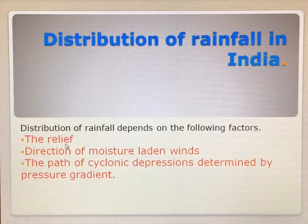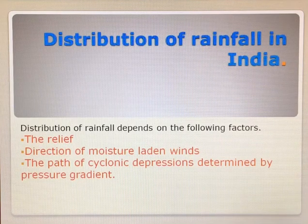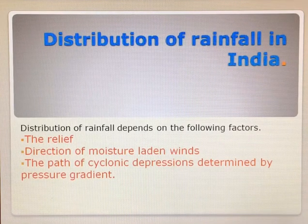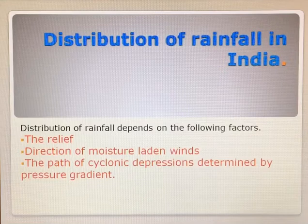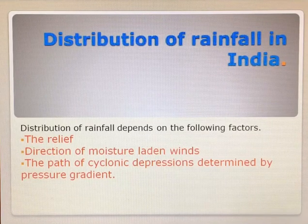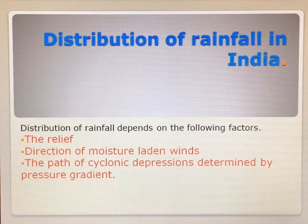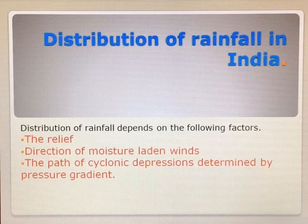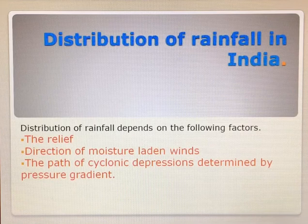Relief, when you talk about it, is nothing but the landform — how it behaves in a particular area. If the landform has got good height, it is going to block the moisture-laden winds and helps to cause heavy rainfall on the windward side. If it's a low-lying area, they are not going to block the rain-bearing winds and that particular area is not going to have heavy rainfall.